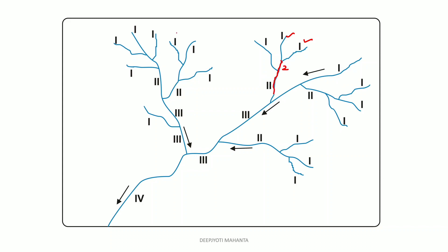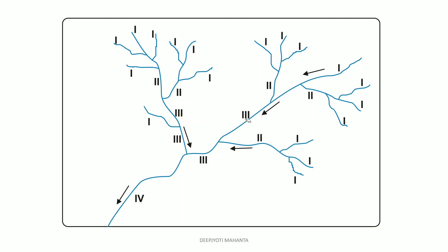Similarly, you can see here: first order and first order make a second order. Then a first order comes from the other side, making it second order again — same rule applies, same stream continuing, so we count it as a single second order. Like this, your stream ordering is done. You can see second order and second order meeting at a point, and we are getting a third order stream. If you want to see the full diagram, you can take a screenshot or pause the video.